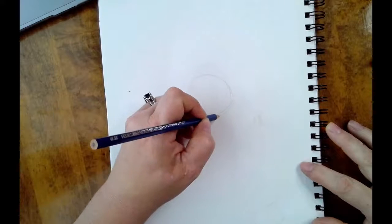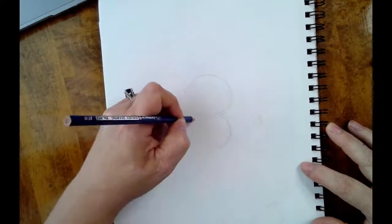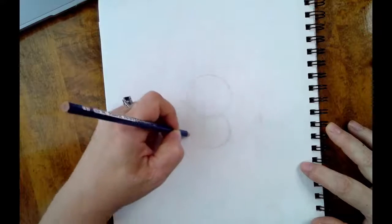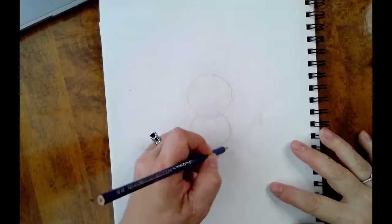Now for a cat, you're going to actually draw three circles, so it's going to kind of look like a snowman, but the middle circle is going to be the smallest. And then the bottom one is going to be a little bigger.